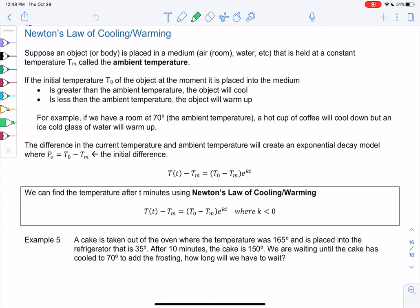So a lot of words. What am I talking about? Let's say our room is 70 degrees. That's the ambient temperature. If we place a hot cup of coffee in the room, it will cool down. But an ice-cold glass of water would warm up. And so it turns out that the difference between the current temperature and the ambient temperature will create an exponential decay model. With the initial P0 being the initial difference, T sub 0 minus T sub M. So the initial temperature of the cup of coffee minus the initial room temperature.